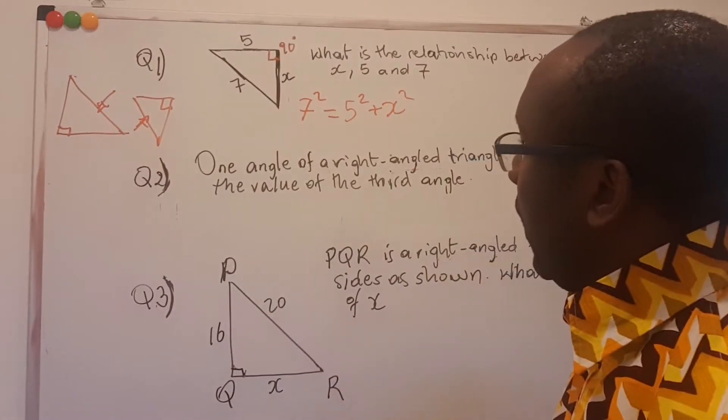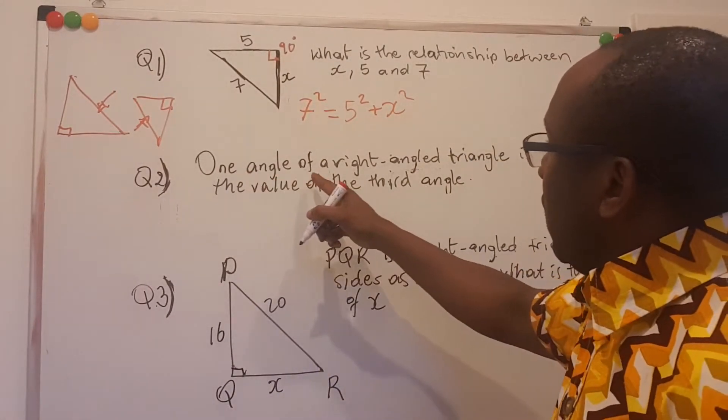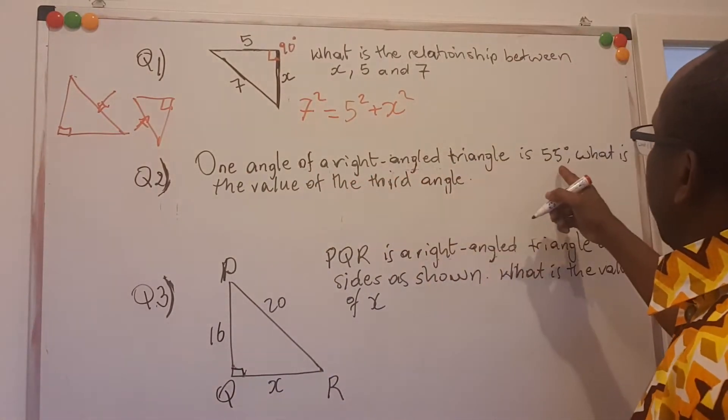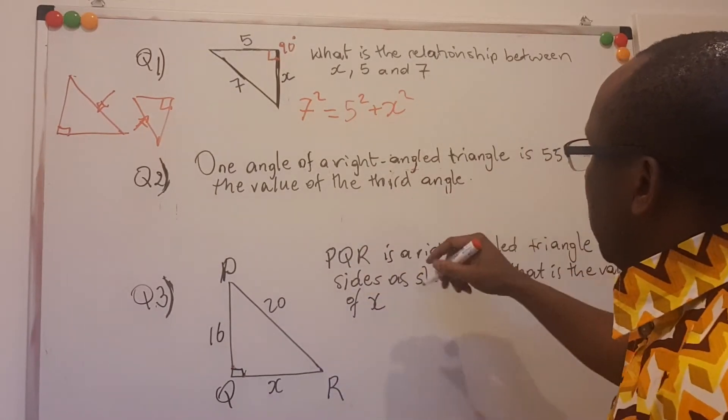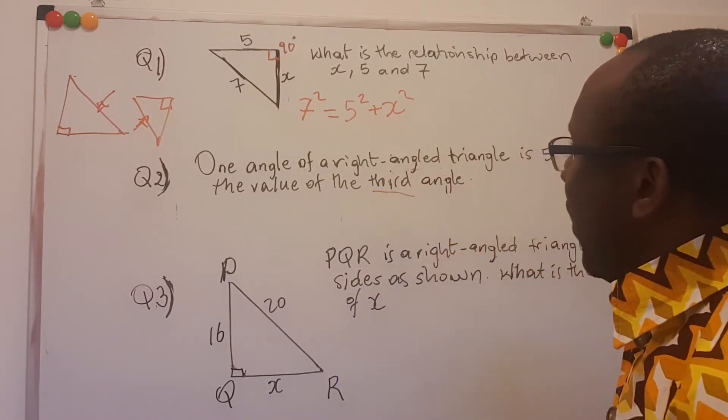Question number two. One angle of a right angle triangle is 55 degrees. What is the value of the third angle? The third angle, but where is the second one?